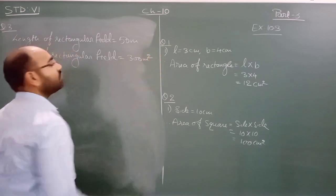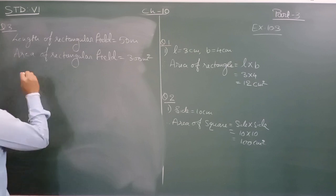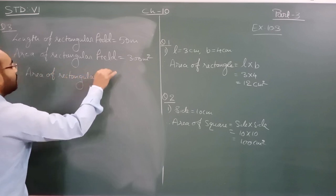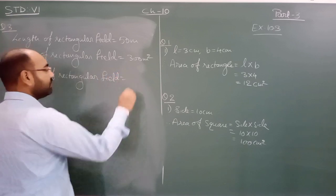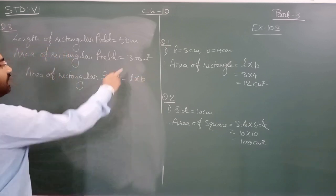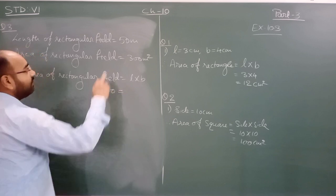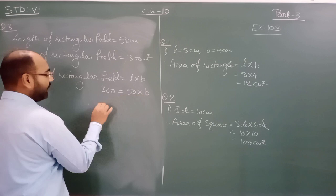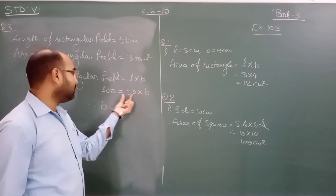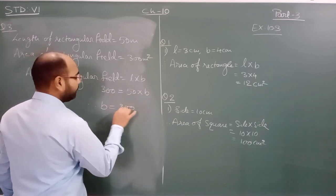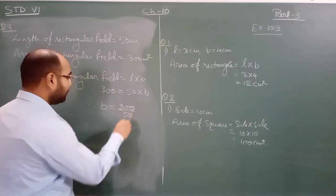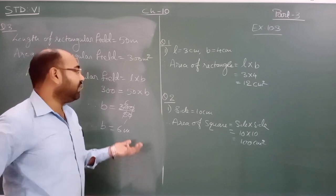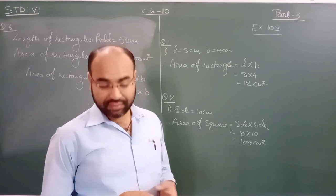The area is 300 meter square, which is already given. We apply the formula: area of rectangle equals length into breadth. Area is 300, length is 50, so 300 equals 50 into breadth. Therefore breadth equals 300 divided by 50, which gives us 6 meters.